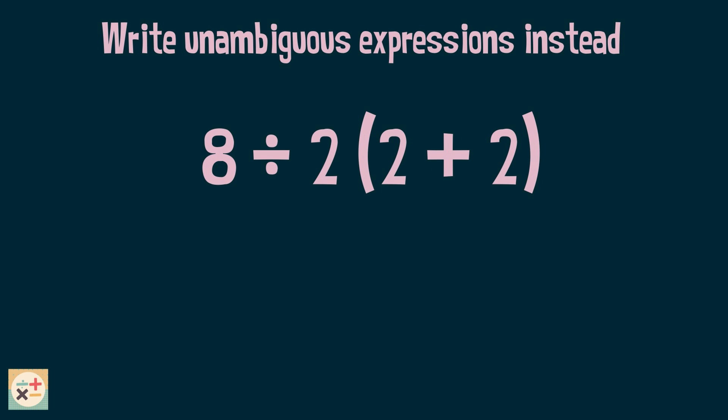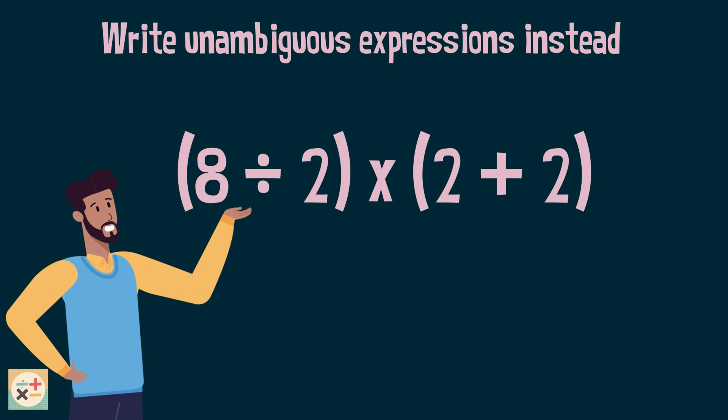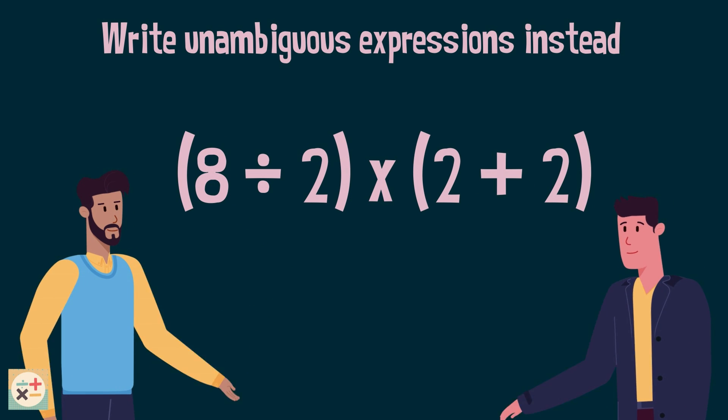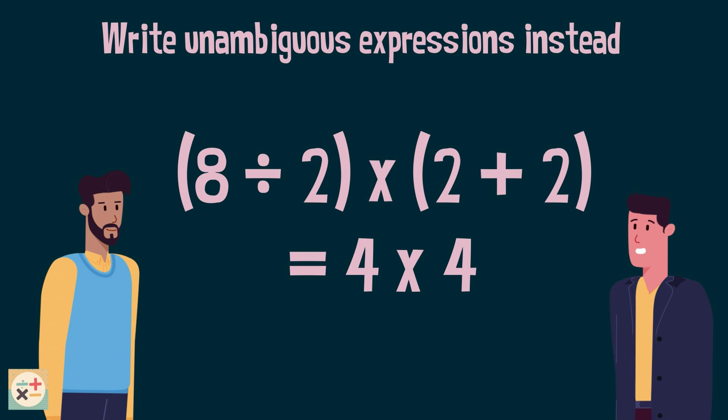So how can we end this debate, and similar ones, once and for all? Well, the only way to know with absolute certainty what the intended answer to this question is, is to ask the person who initially wrote it. It is most likely impossible to do this, so it is extremely important to always write clear, unambiguous equations that are not open to interpretation. For example, to make this expression less ambiguous, we could include some brackets and display the multiplication sign. This way, the definitive answer is 16.